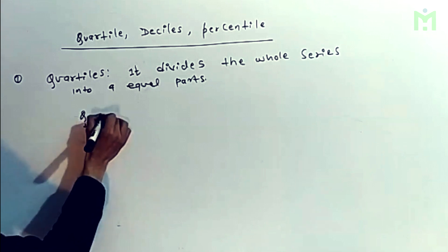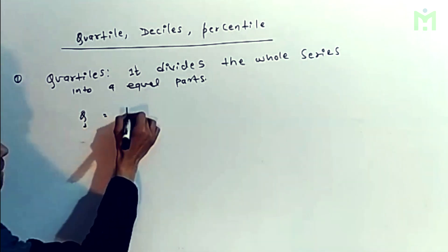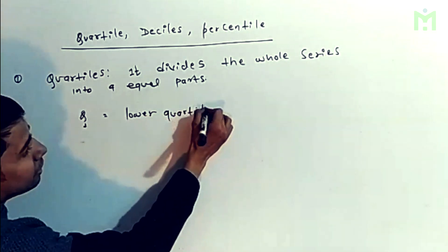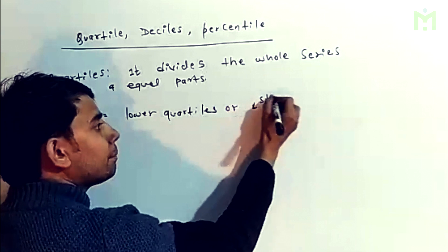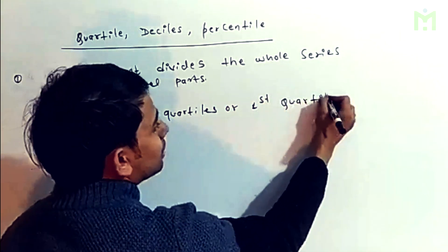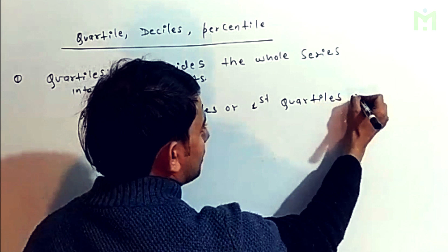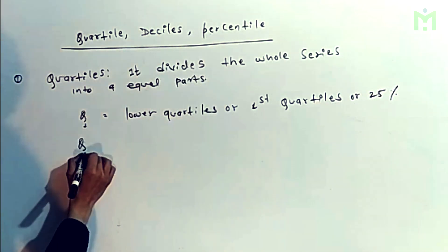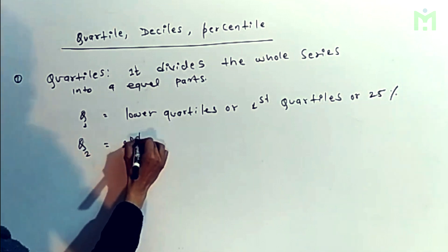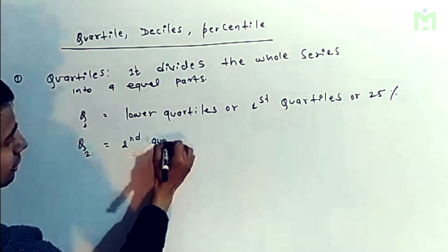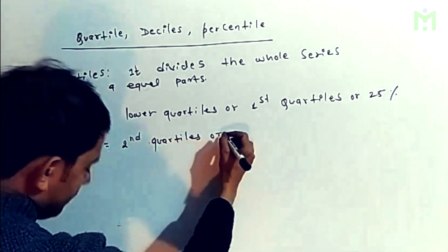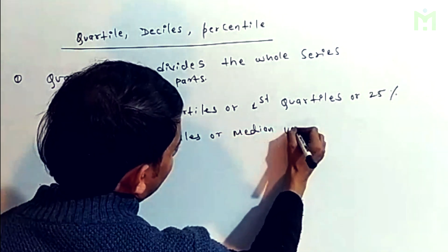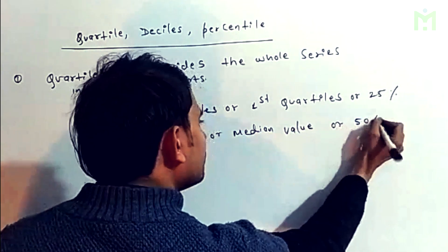When you say Q1 — lower quartile 1. The data values: 1, 1, 1, 1, 1, 1, 1, 2, 2, 2, 2, 2, 2, 2, 2, 1, 2, 2, 2, 2.